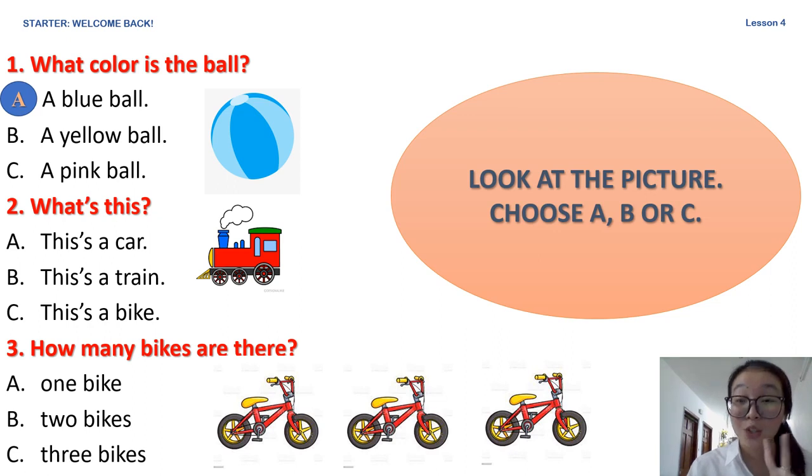And question number 2, what's this? A, this is a car. B, this is a train. C, this is a bike. And the answer is, yes, that's right, this is a train.